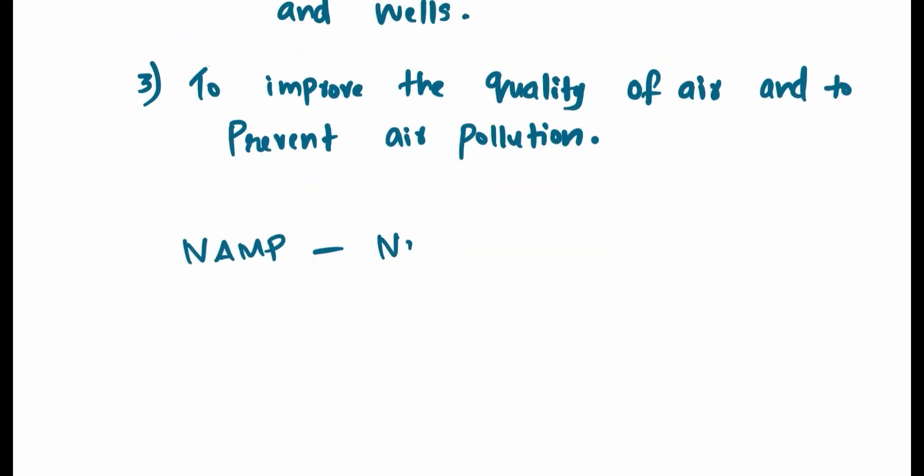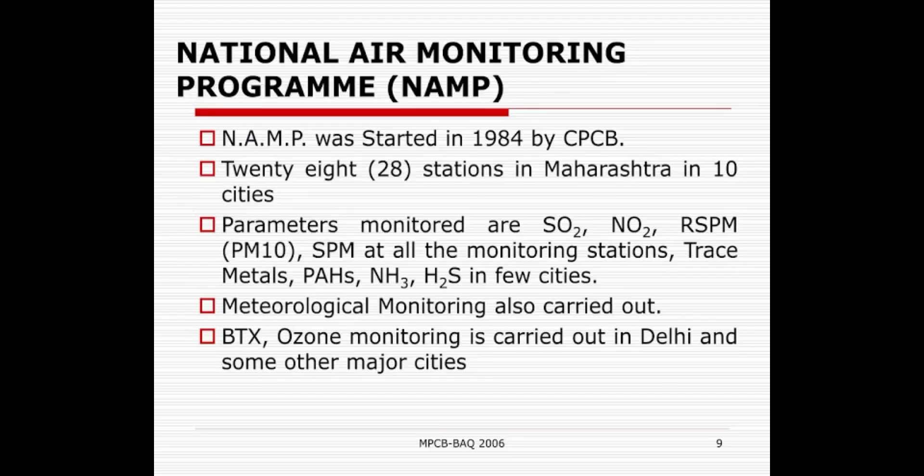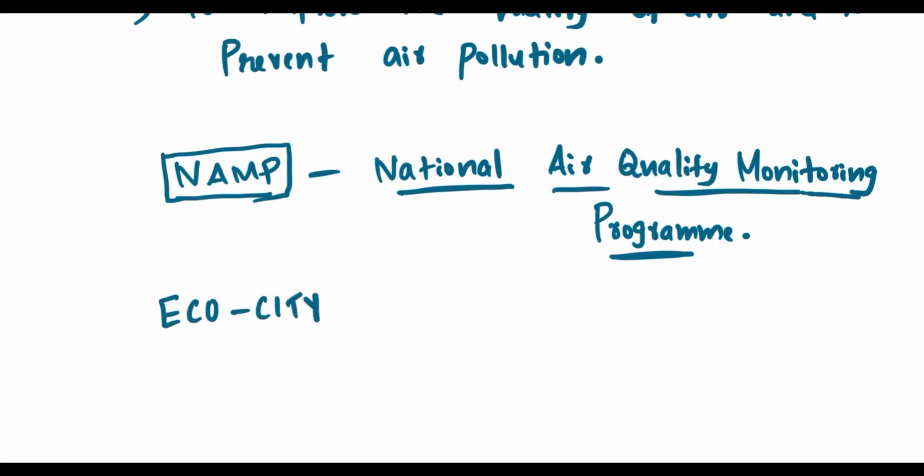For checking and monitoring air quality, a National Air Quality Monitoring Program has been introduced by CPCB in 1984. In this program, various air pollutants such as sulfur dioxide, oxides of nitrogen, SPM or suspended particulate matters are all monitored. Apart from this, for improving the environment, various other programs were also initiated by CPCB.